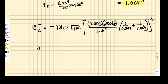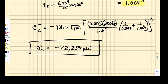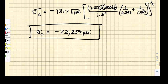And I have 1 over 0.342 plus 1 over 1.069. I take the square root of all of that, and I find a contact stress of minus 72,259 psi. I don't know what my factor of safety is until I know what my design allowable is.